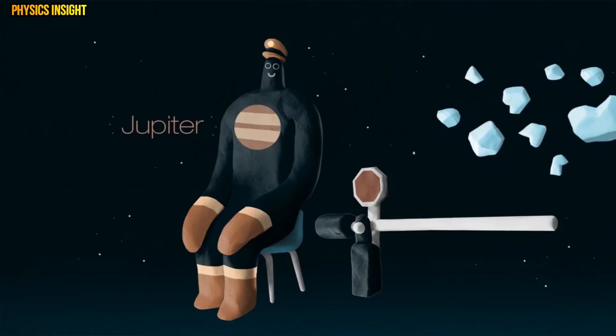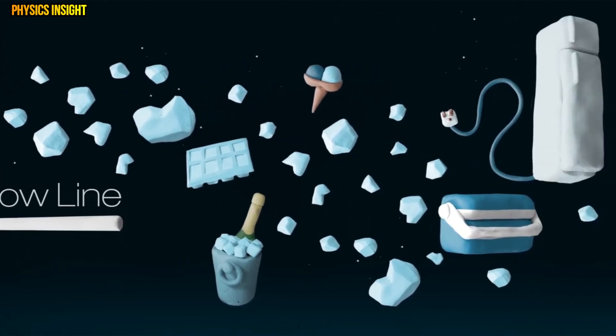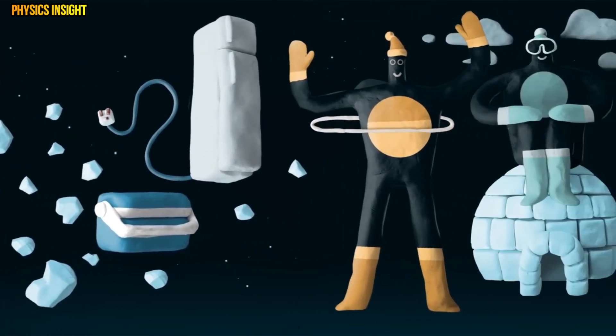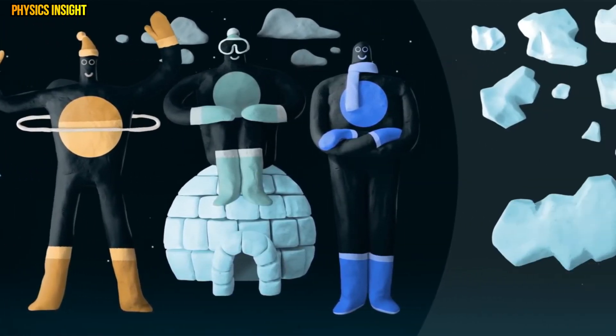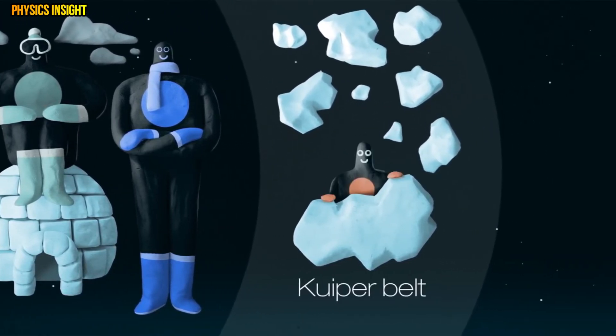The gas giant Jupiter marks a boundary in the solar system called the Snowline, beyond which objects contain a lot of ice. Past the other three gas giants we find a huge ring of ice chunks large and small called the Kuiper Belt where the dwarf planet Pluto lives.